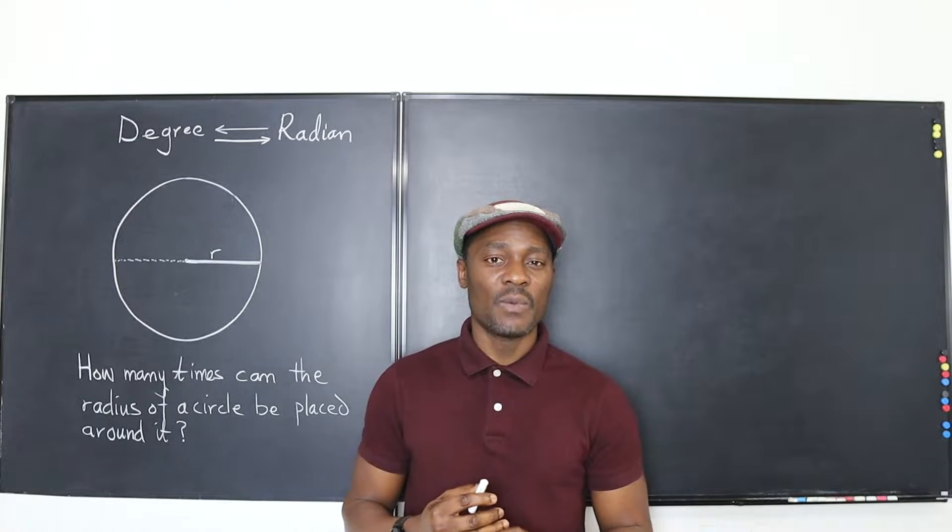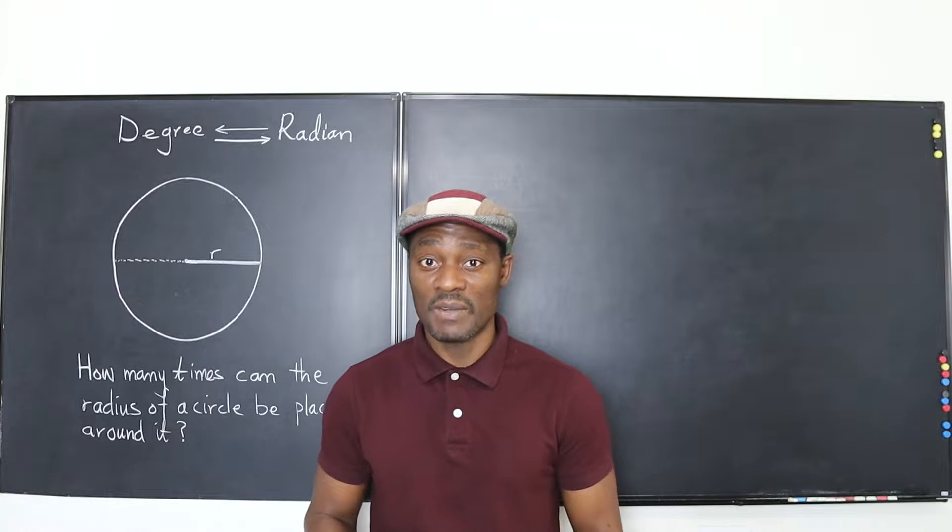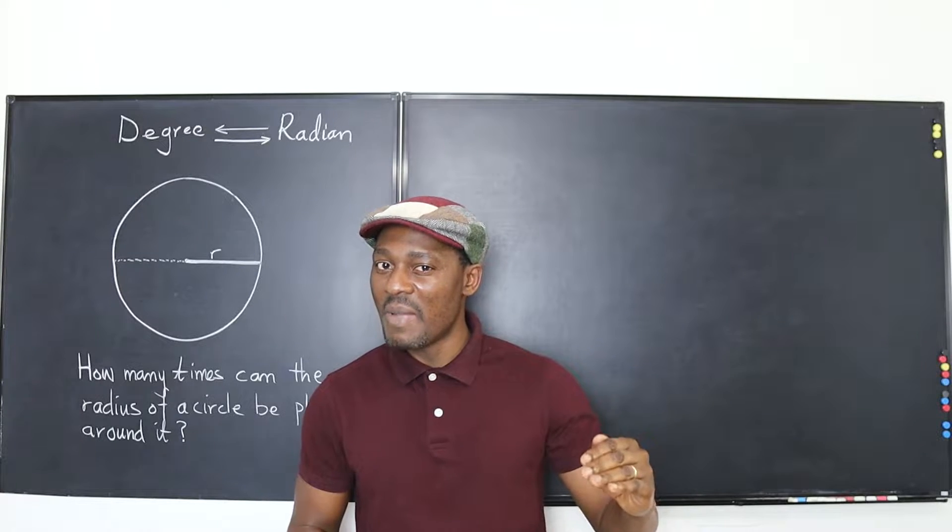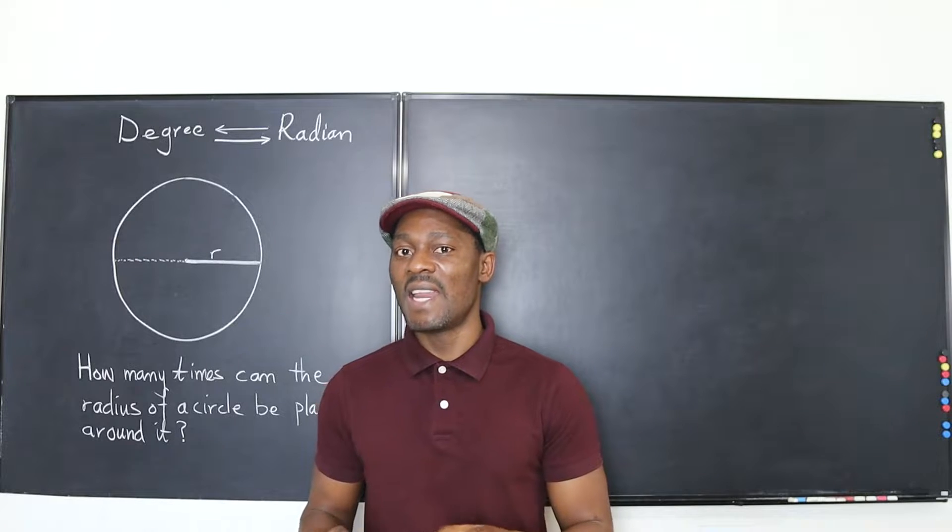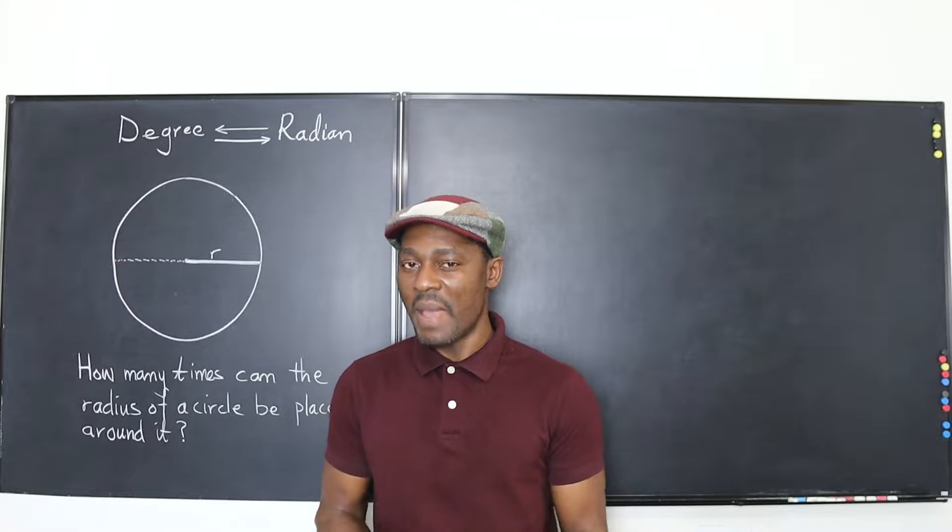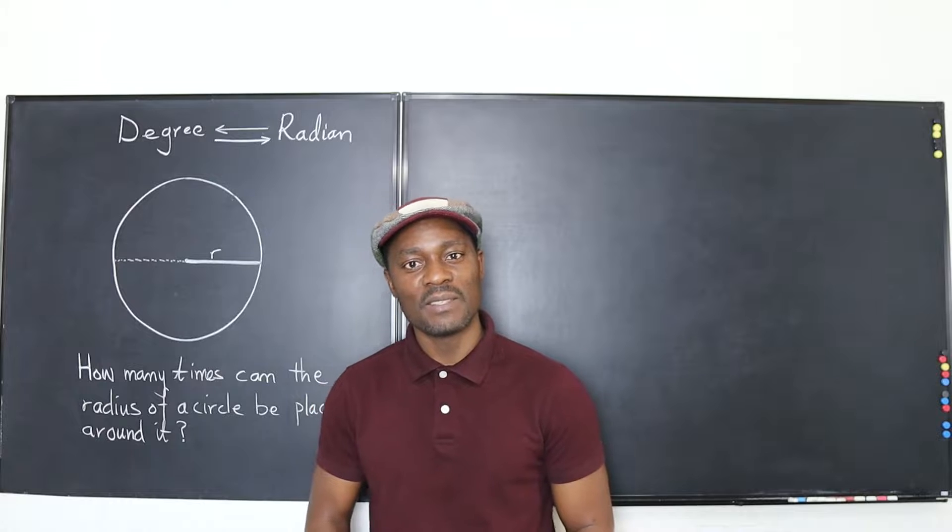When you first start dealing with angles you'll be talking a lot about degrees, but as you go higher in math you start realizing that there's another way to measure angles and it's called the radian measure and that's what I want to explain in this video.